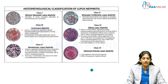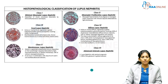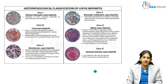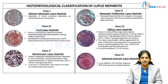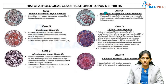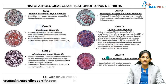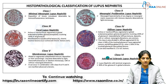SLE is known to affect the kidneys, and there is a classification of lupus nephritis. Six types of lupus nephritis are classified based on histopathology of the kidney. Renal biopsy is done, and lupus nephritis is classified from Class 1, which is mild, to Class 6, which is advanced. Class 1 is minimal mesangial, Class 2 is mesangio-proliferative, Class 3 is focal lupus nephritis, Class 4 is diffuse lupus, Class 5 is membranous, and Class 6 is advanced sclerosis lupus nephritis.